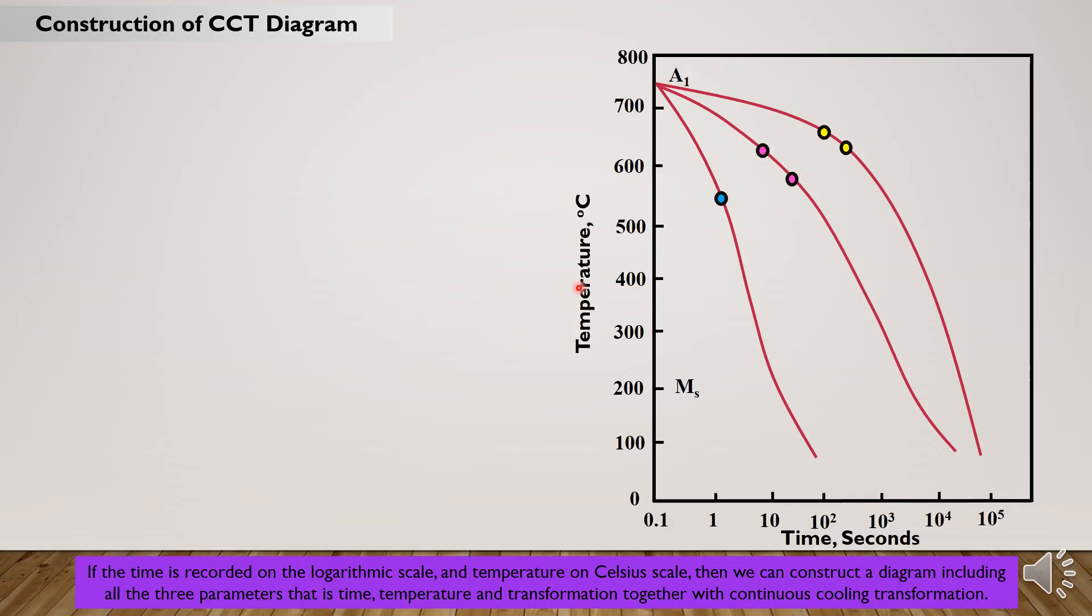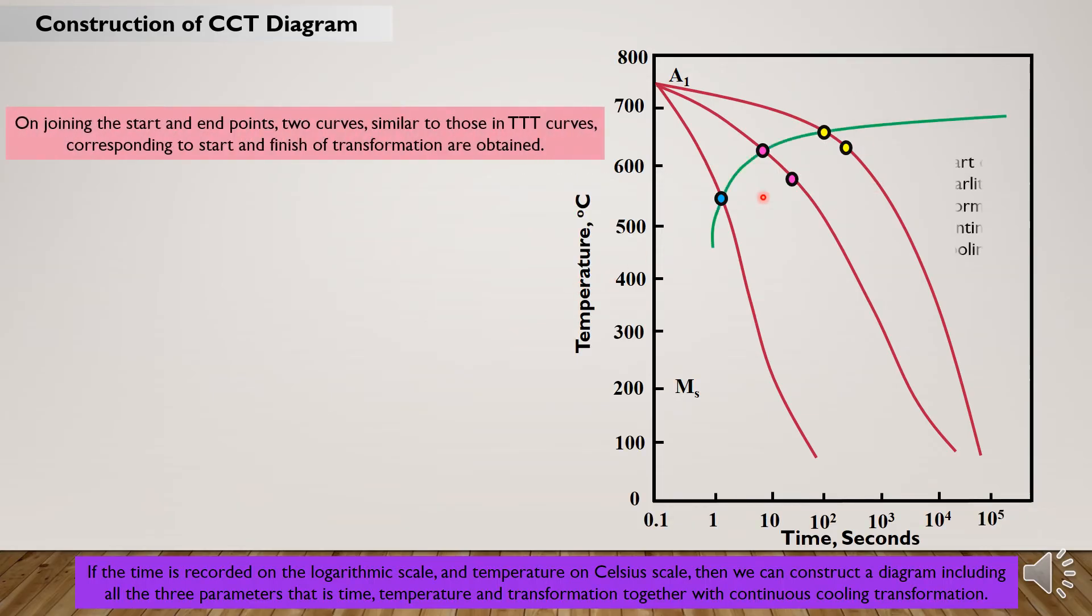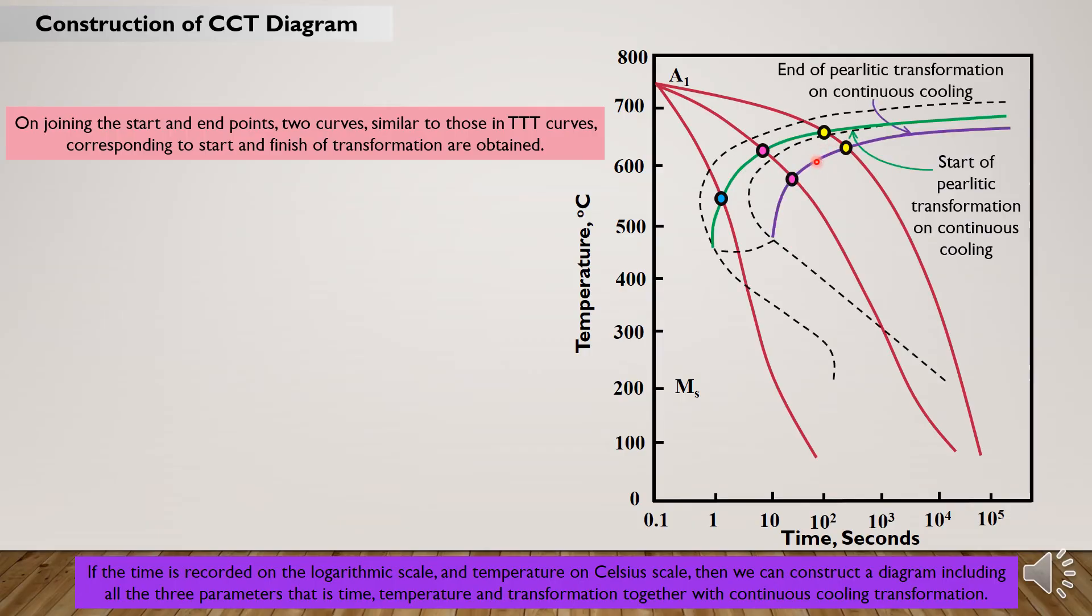On joining the start and end points, two curves similar to those in TTT curves corresponding to start and end of pearlitic transformation are obtained.